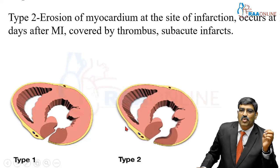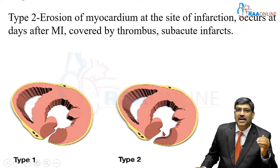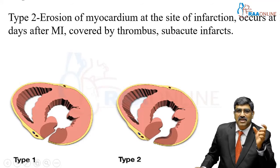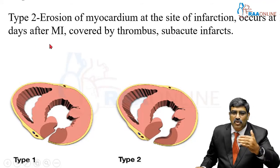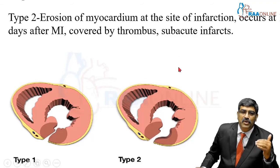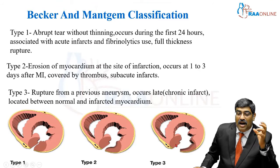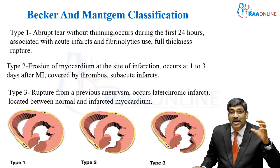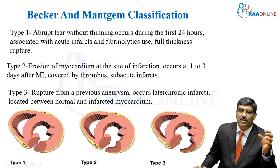Type 2 is an erosion of myocardium at the site of infarction. It occurs at one to three days — that is 24 to 72 hours after MI — is covered by thrombus, and is usually associated with subacute infarct. In Type 3, an LV aneurysm is formed and ventricular septal rupture can happen with rupture from the aneurysm.